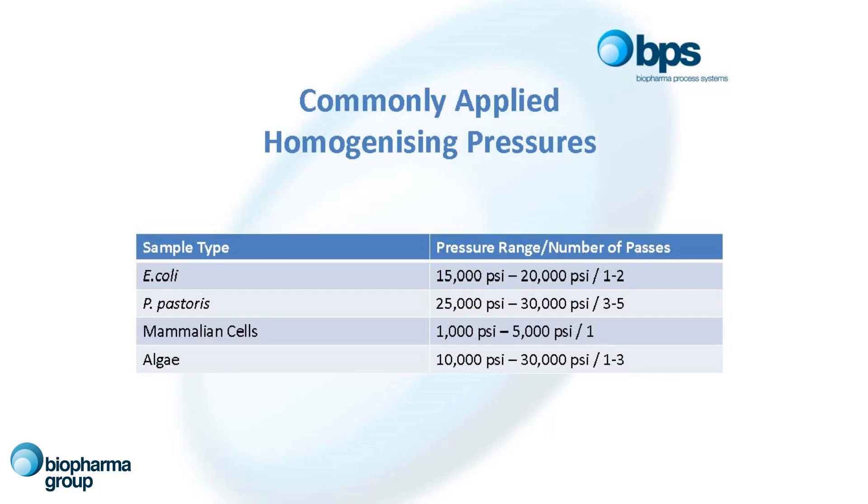If you are processing bacteria you may only require one or two passes. Bacteria such as E. coli may require 15,000 to 20,000 psi, whereas if you're working with yeast, which are a lot tougher in general, they would require pressures as high as 25,000 or even 30,000 psi, and the number of passes required would be 3, 4 or even 5 passes.